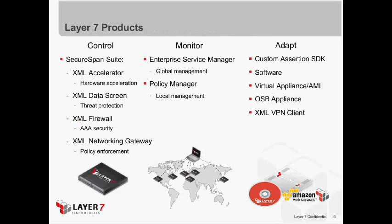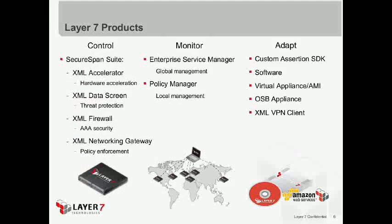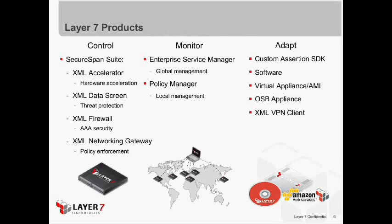Switching gears, I want to talk about Laird7 products relevant to the Cisco AXG. Our products sort into three basic categories. On the hardware side, we have the XML Accelerator, XML Data Screen, XML Firewall, and XML Networking Gateway. These are functionally different products but share a common lineage and processing model. The Data Screen incorporates Accelerator functions; the Firewall encompasses both; and the XML Networking Gateway does everything the others do, plus more. We'll focus on the XML Networking Gateway and XML Firewall as most relevant to the Cisco product comparison.